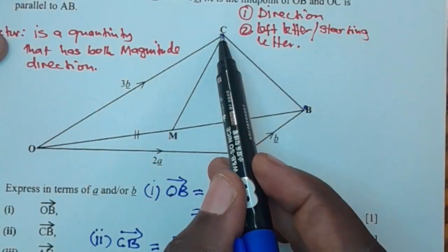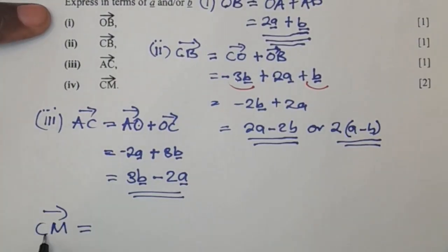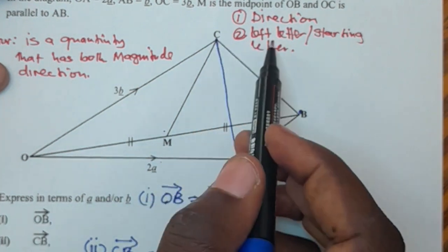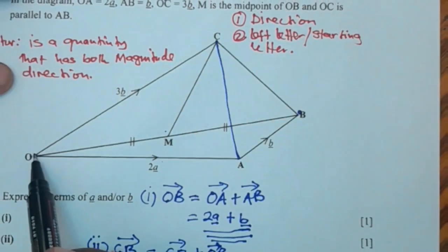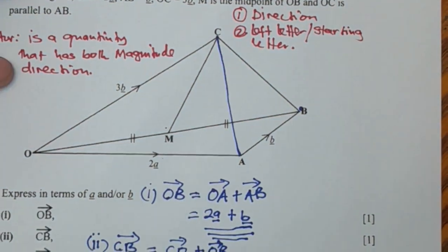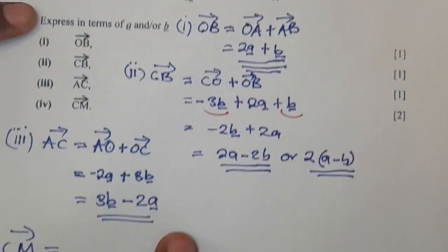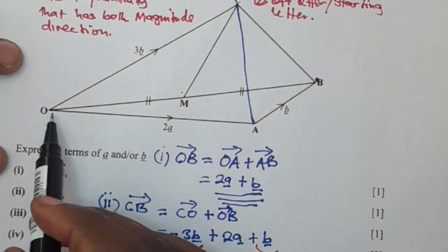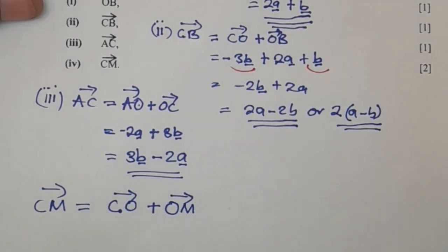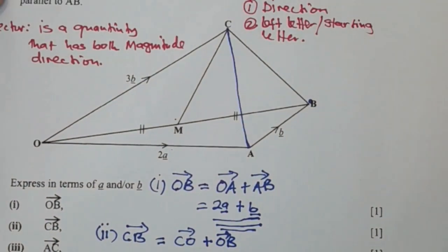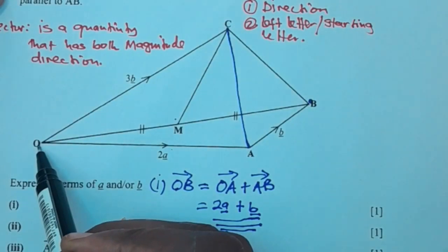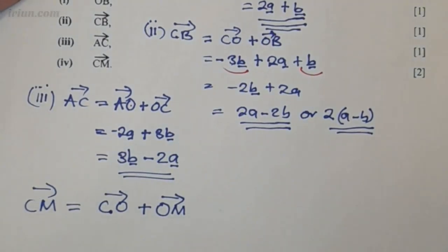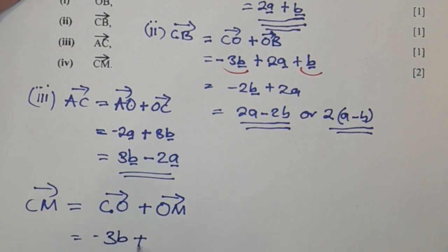Then we can finally look at CM. So we have CM. Remember, we're going to start our movement from C. So this is CM. So our movement will begin from C to O, then from O to M. So meaning we are going to have CM being equal to CO plus OM. So now when we look at this, CO will be negative, the negative of OC. So CO will be negative 3b. So we'll have negative 3b plus OM.